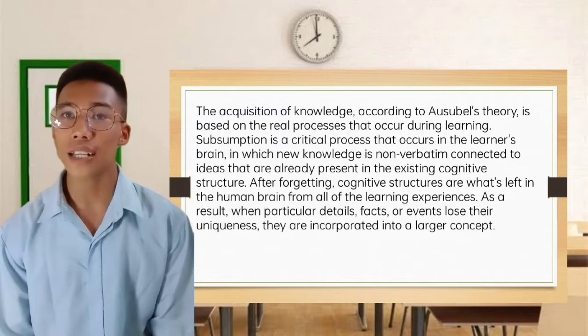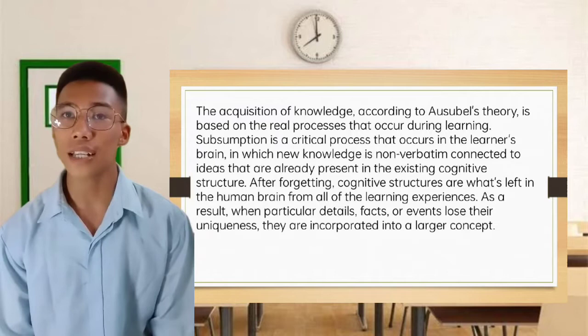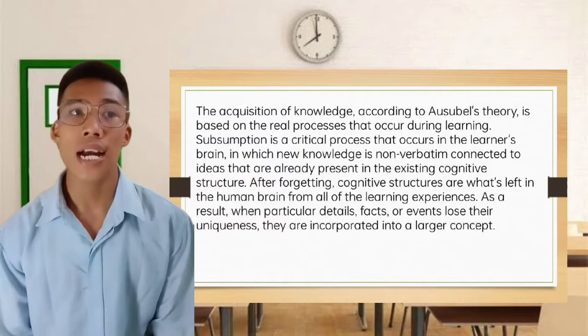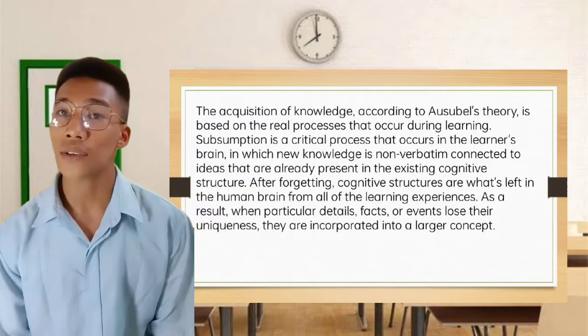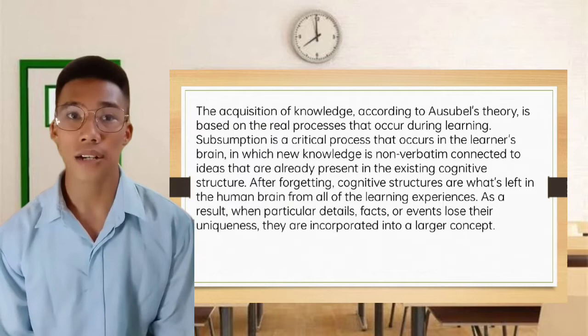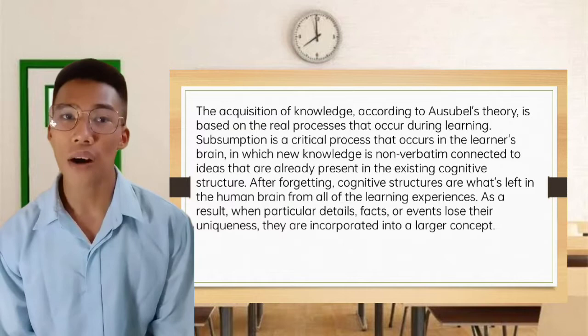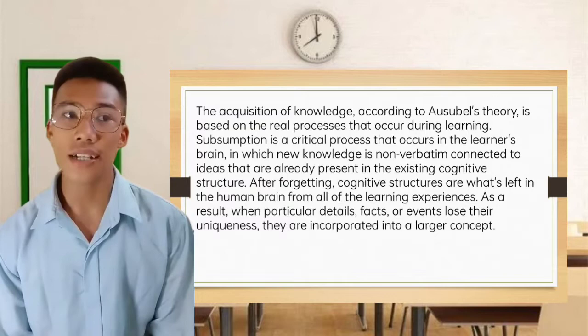Subsumption is a critical process occurring in the learner's brain in which new knowledge is verbatim-connected to ideas already present in the existing cognitive structure. New content is related to relative ideas already present in the cognitive structure. After forgetting, the core cognitive structure is what remains in the human brain from all learning experiences. When particular details, facts, or events lose their uniqueness, they are incorporated into a larger concept.